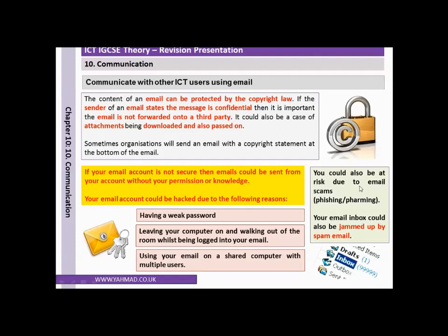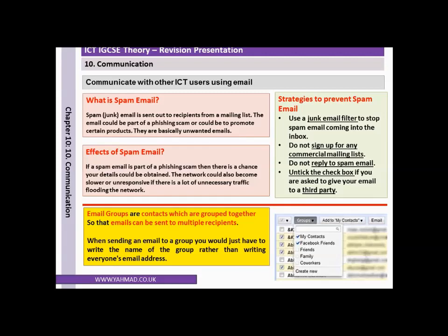You could also be at risk due to email scams like phishing and farming. Your email inbox could also be jammed up by spam email. Spam email is basically junk email which is sent out to recipients from a mailing list. The email could be part of a phishing scam or could be to promote certain products — they are basically unwanted emails.